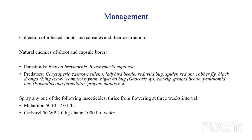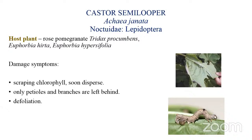For management, collect and destroy infested shoots and capsules. Conserve natural enemies such as parasitoids like Bracon brevicornis and Brachymeria, and predators like Chrysoperla, ladybird, reduviid bug, spider, robber fly, black drongo, common myna, big-eyed bug, and earwig. If infestation is more, spray malathion or carbaryl.